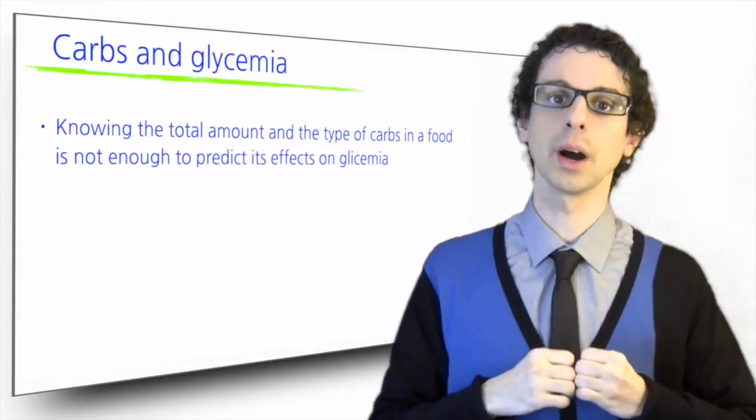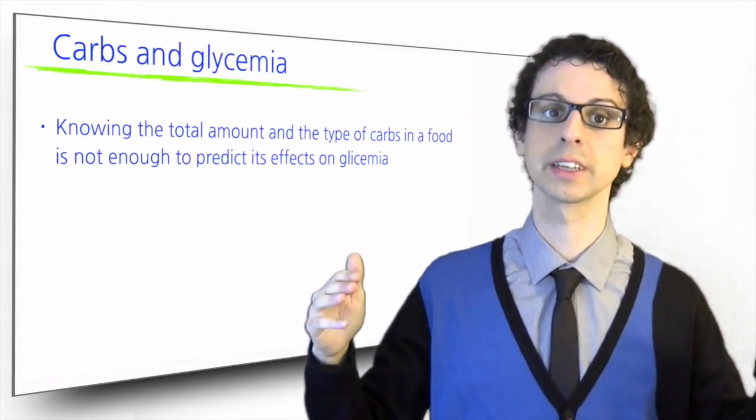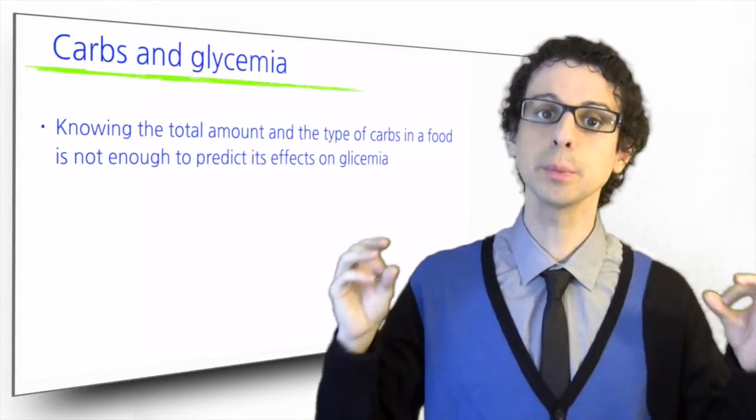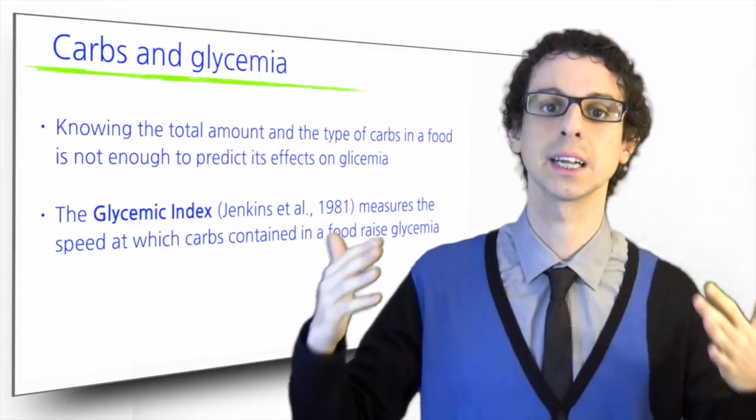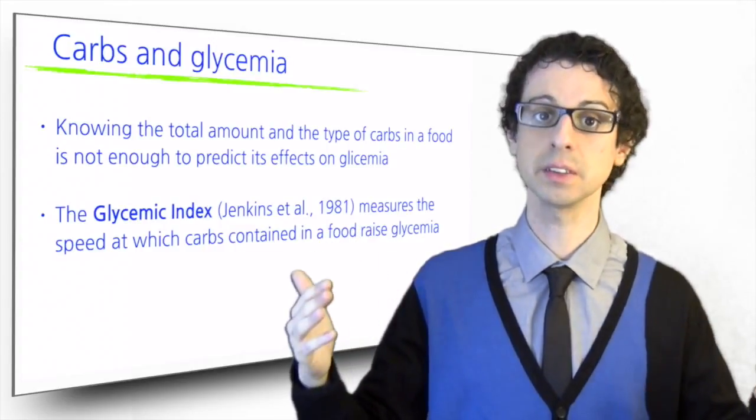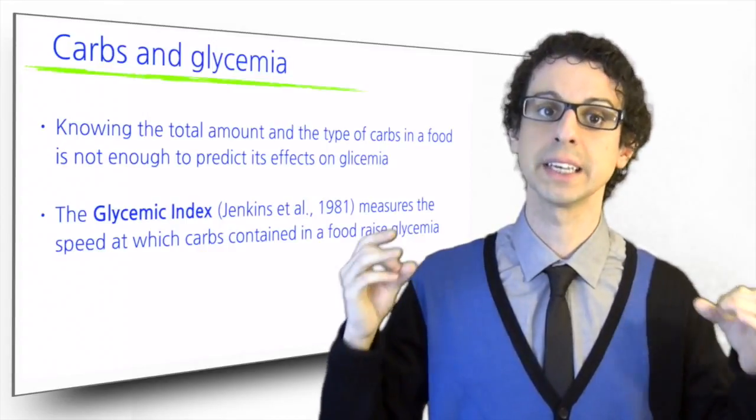In 1981, Jenkins and co-workers published a landmark article in the American Journal of Clinical Nutrition in which they proposed a new indicator that was able to measure the speed at which the sugars containing a specific food would raise blood glucose, and they called this indicator glycemic index.